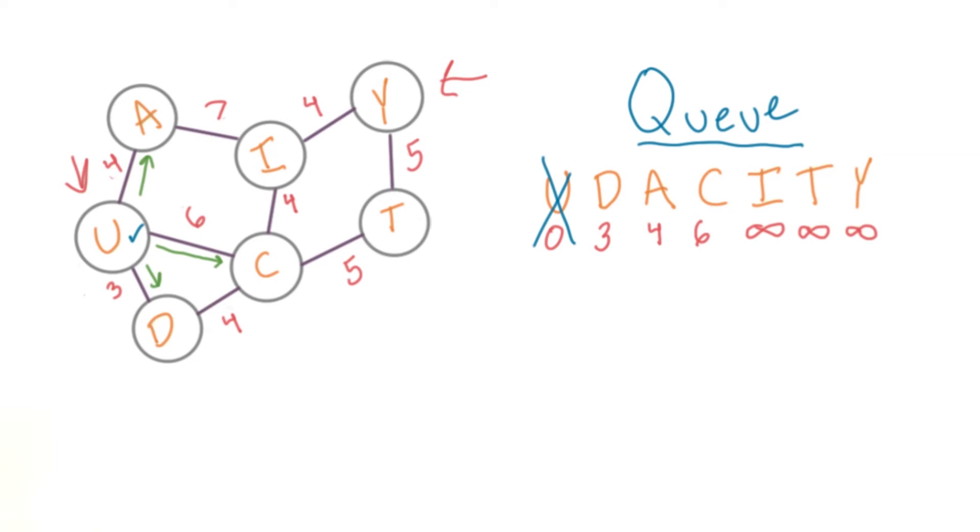Now we're faced with a choice. Which node should we visit? We'll always pick the node with the smallest distance value, which means we run extract min on the queue.